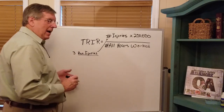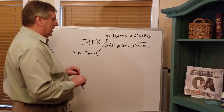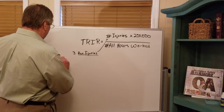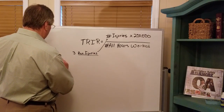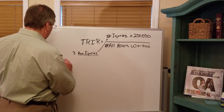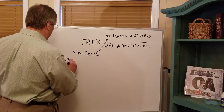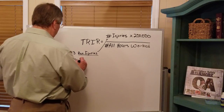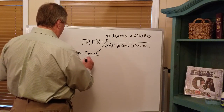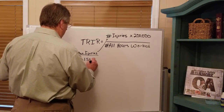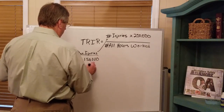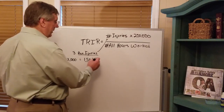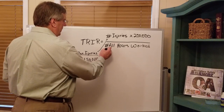Our hypothetical widget manufacturing company has 75 employees, each of whom worked 2,000 hours during the previous year. That gives us 75 × 2,000 = 150,000 total hours, and that is the number that goes in the denominator.